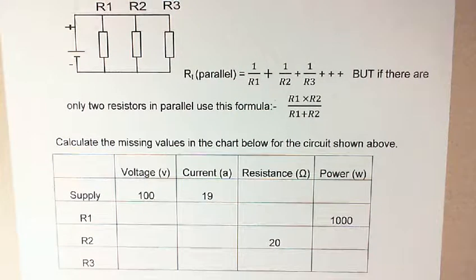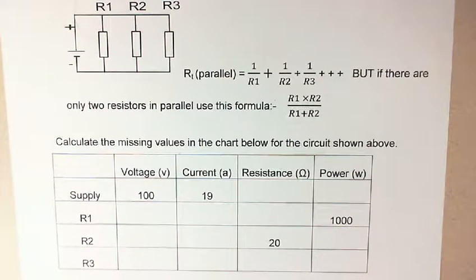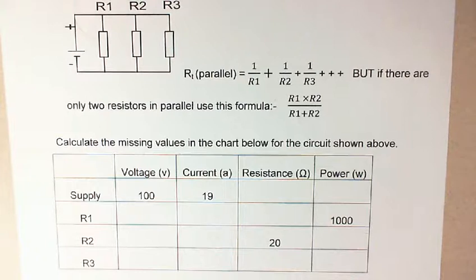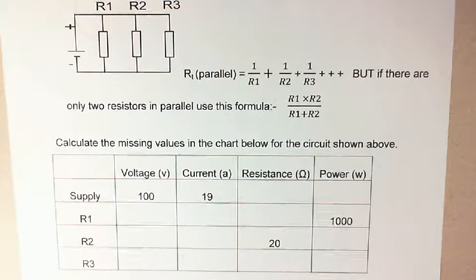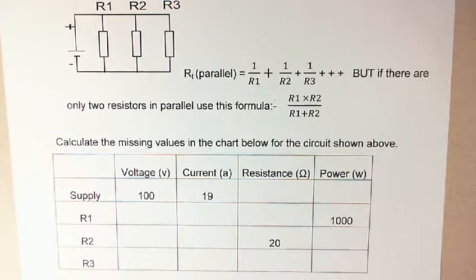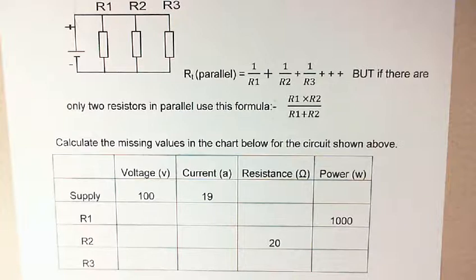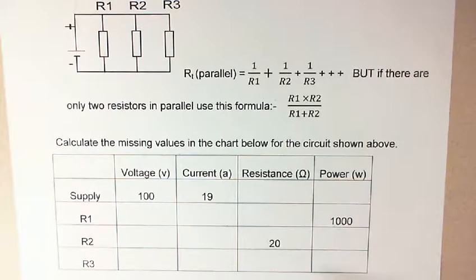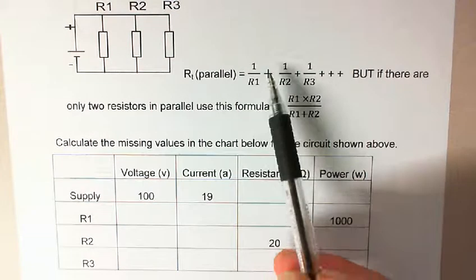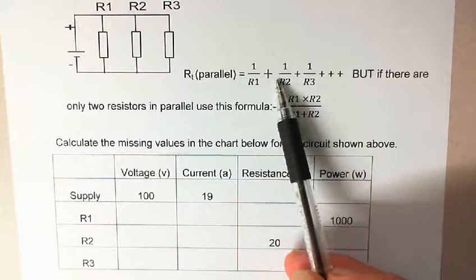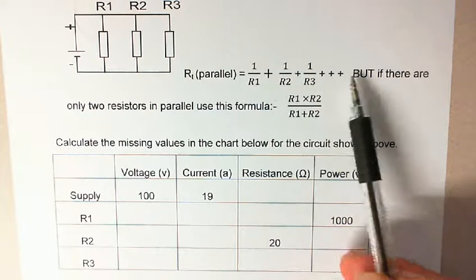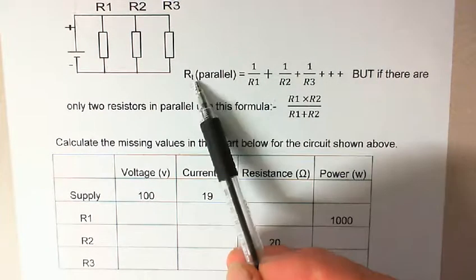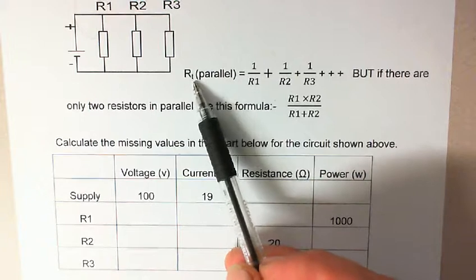Here we have three resistors in parallel. Resistors in parallel is a current divider. The voltage remains the same. The formula for resistors in parallel is the inverse, which is 1 over R1 plus 1 over R2 plus 1 over R3, and so on, which gives you your 1 over R total.